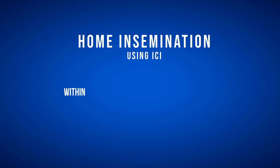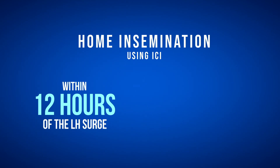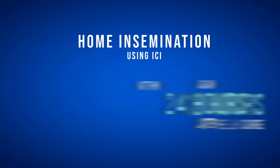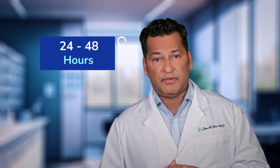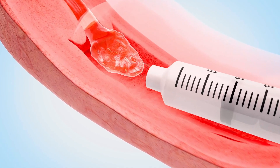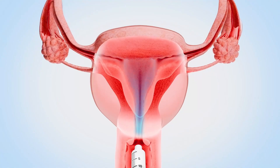IUI is typically performed the day after the LH surge is detected using an OPK. In contrast, home insemination using ICI should be performed within 12 hours of a positive LH surge as detected by an OPK, and again 24 hours later. This strategy aligns with studies of regular timed intercourse, where pregnancy rates were highest if intercourse was performed at least twice in the 24 to 48 hours before ovulation. It also correlates with the timing of cervical mucus changes, which facilitates the capture of motile sperm for time release into the fallopian tube and egg fertilization.